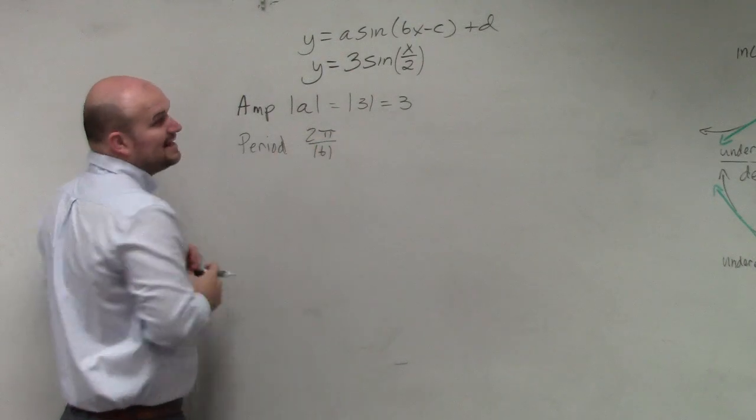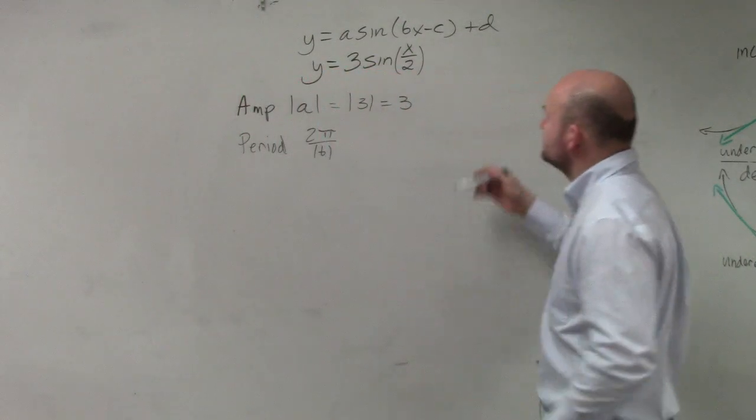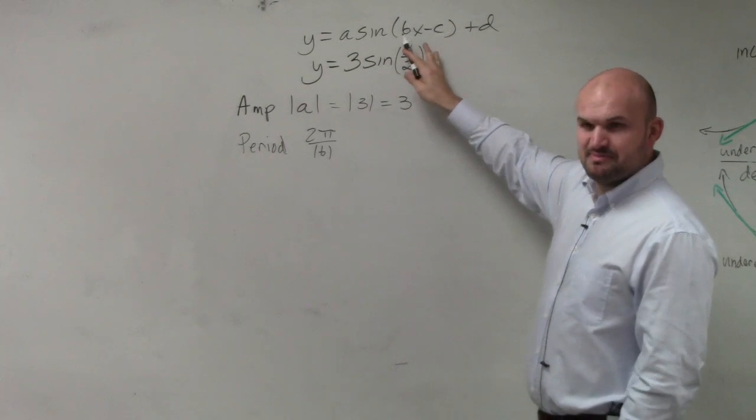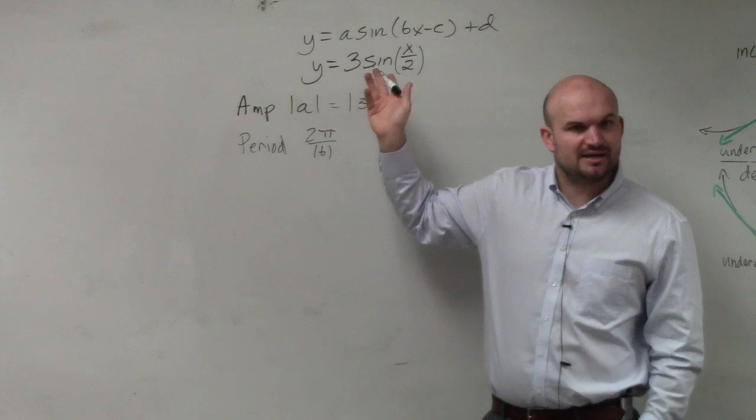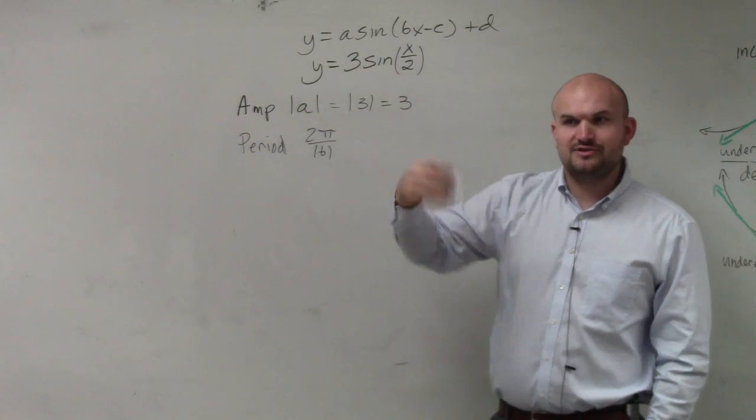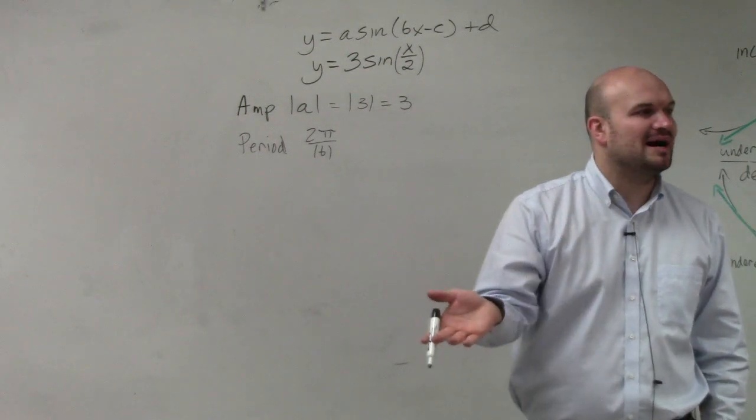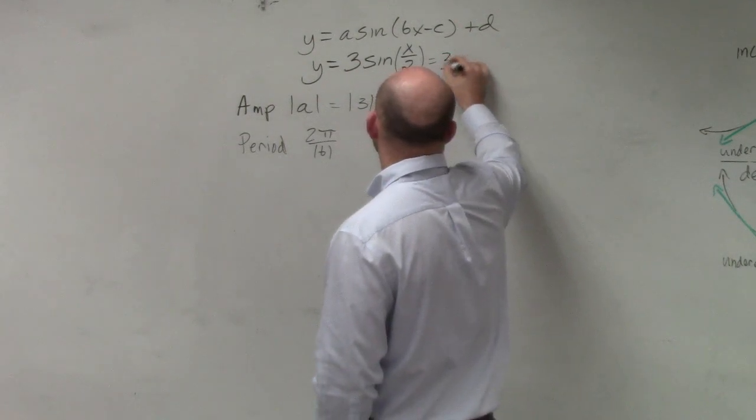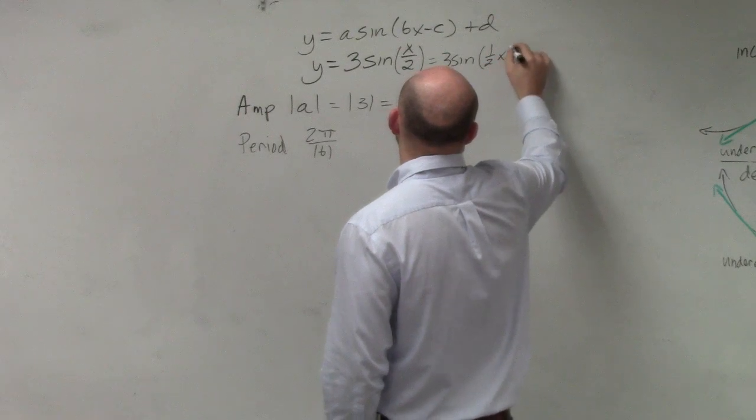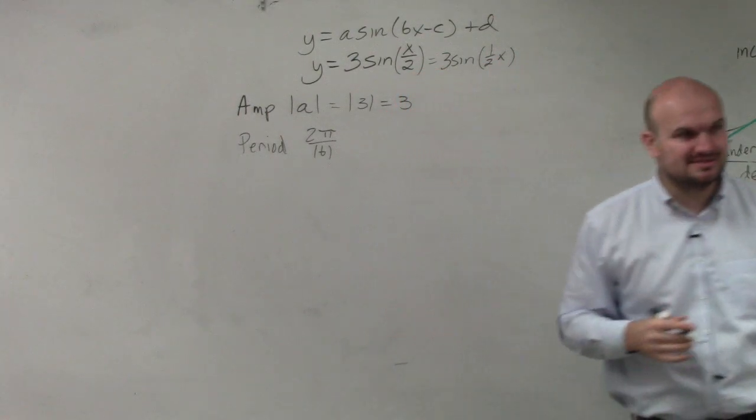Now we need to identify your B. And this one looks a little confusing because B is what's being multiplied by x. Well, here you're not multiplying anything by x, you're just dividing by a number 2. So dividing by 2 is the same thing as multiplying by 1/2, right? You could rewrite this as 3 sin(1/2 x). That's the same thing.